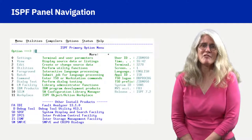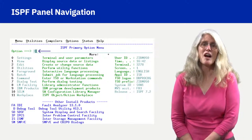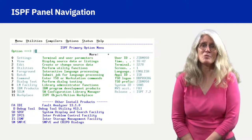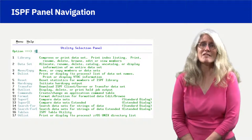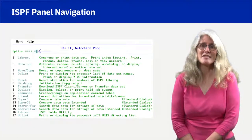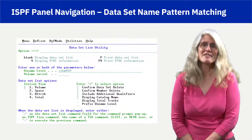The chart shows the ISPF Primary Option menu where option 3, Utilities, is selected by typing the option number on the command line. Note the other installed products at the bottom of the screen — a local customization which adds tools needed at the site to the ISPF Primary Option menu. The result of entering 3, Utilities, from the Primary Option menu is the Utility Selection panel, which has many utility options. The chart example shows option 4, DSList, selected. The result of entering 4 from the Utility Selection panel is the Dataset List Utility panel.